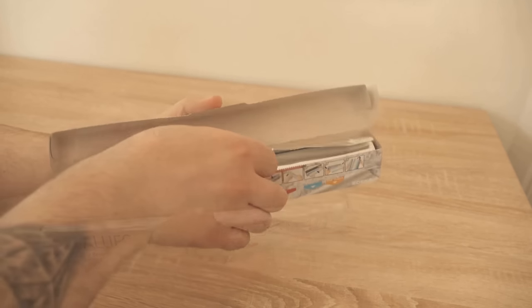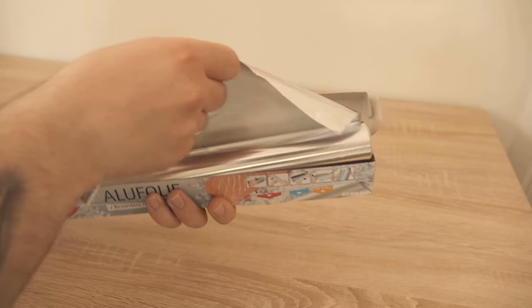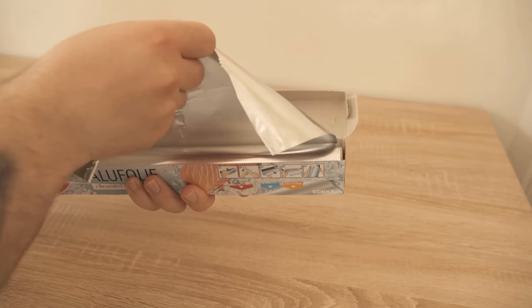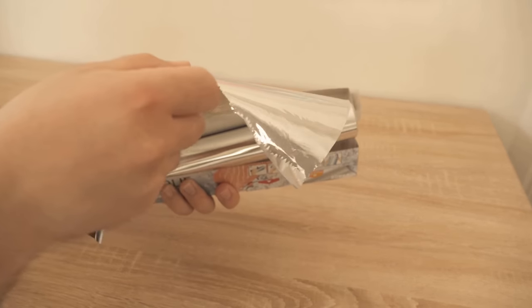You have this fluted side here where you can simply tear off the whole thing. But if you want to pull out some of the foil, you pull out the whole roll.